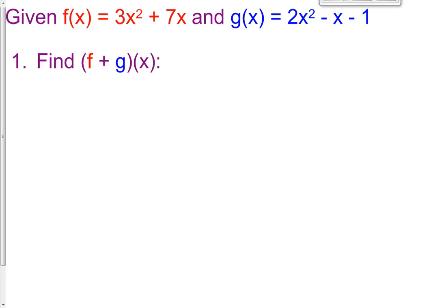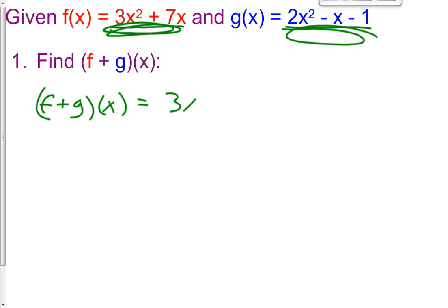The first one is to find f plus g of x. So what that's saying here is this is f(x) and this is g(x), and we need to add them together. So f plus g of x equals this plus this. Nothing too difficult. The notation might seem difficult, but it's actually a very simple math problem.